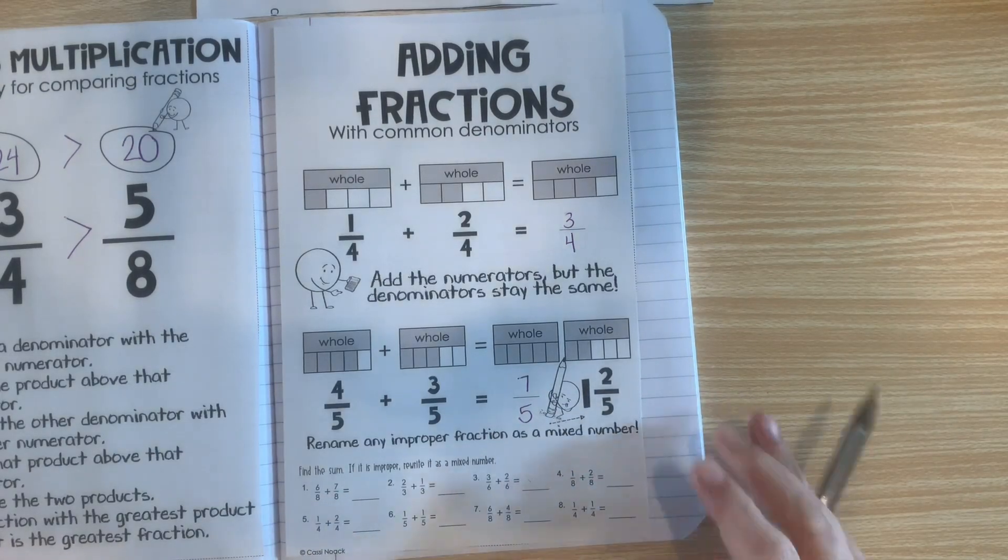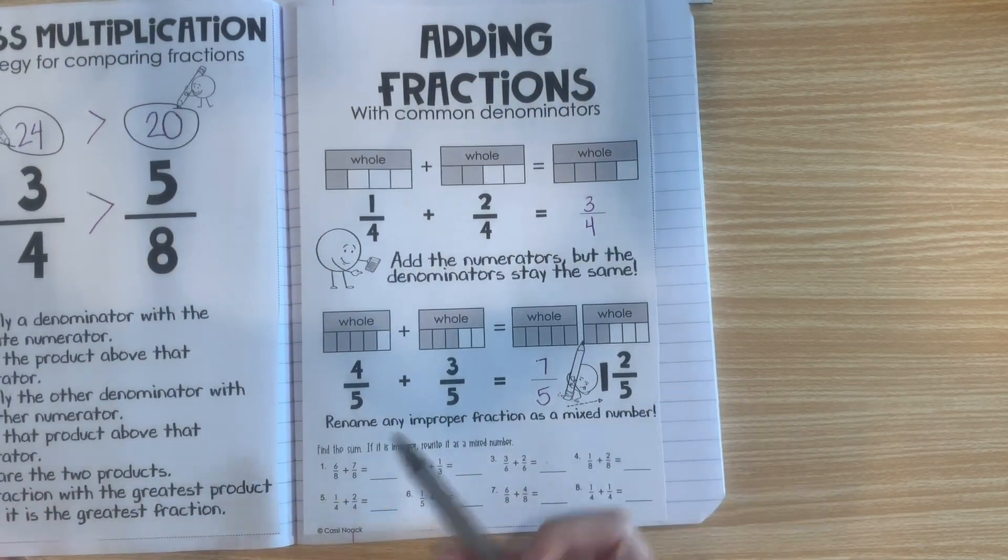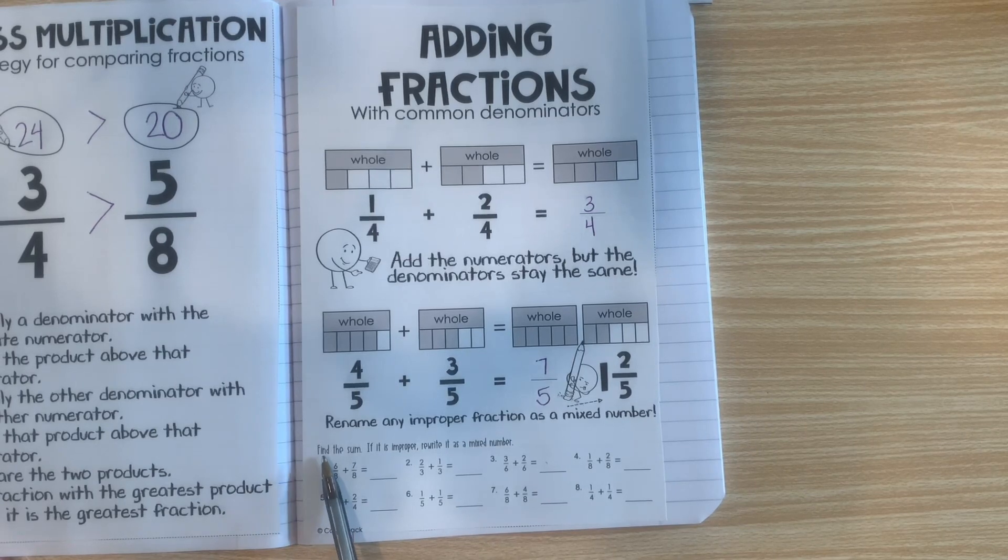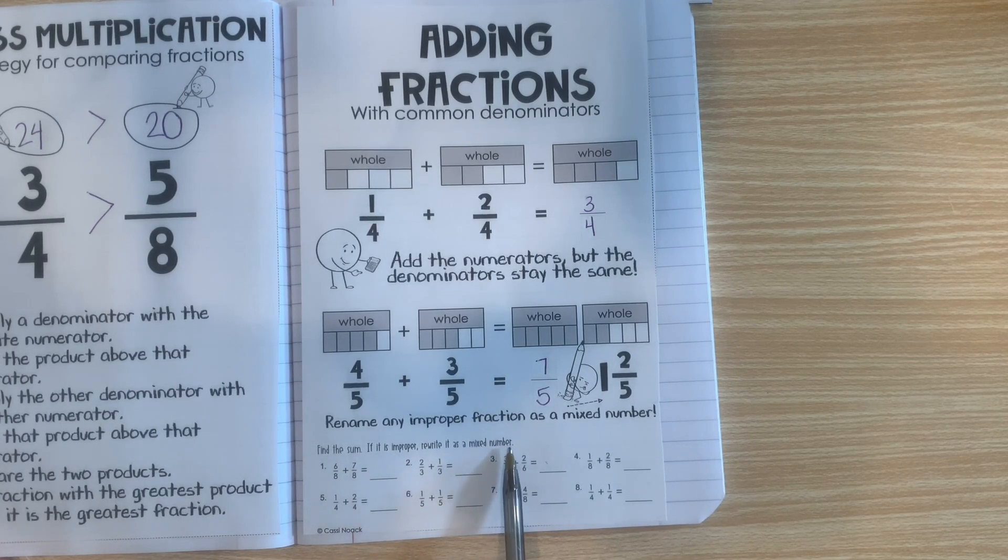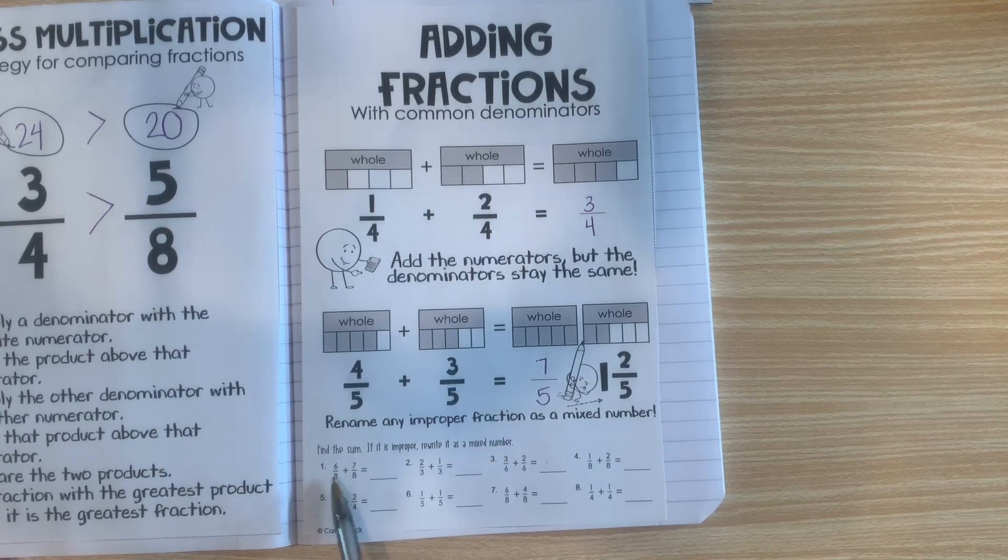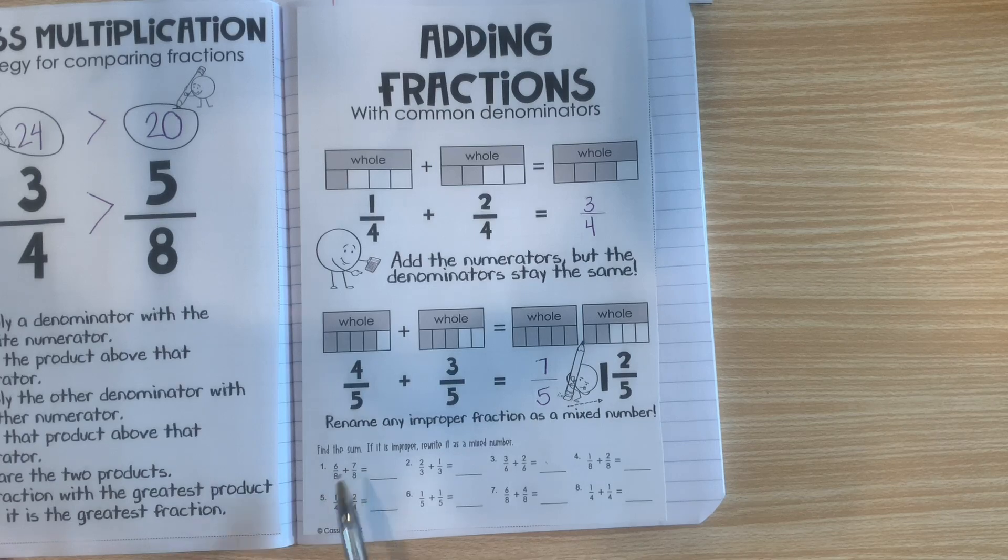Now down here we have some practice problems. Let's do 1 together. It says, find the sum. If it is improper, rewrite it as a mixed number. Step 1 is to add the numerators. 6 plus 7 is 13.